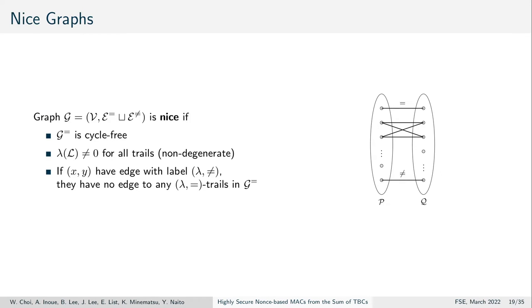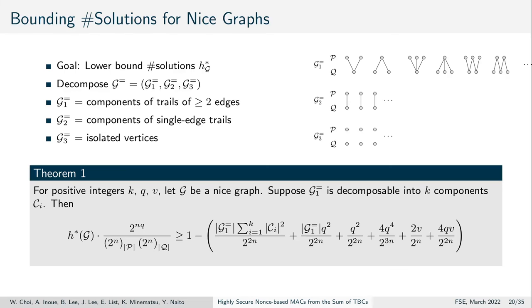Nice graphs will later represent a good transcript without bad events. We call a transcript graph of k components nice if it is cycle-free, non-degenerate, that is, the sum of labels in a trail is not zero, and if edges are connected by an equality, they are not simultaneously connected by an inequality. Given a nice graph, the extended mirror theory allows us to lower bound the number of solutions for a random choice of variable assignments. In detail, the graph will be decomposed into such components of at least two edges, of single-edge trails, and of isolated vertices.